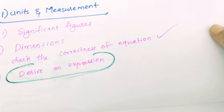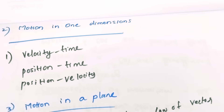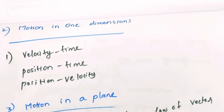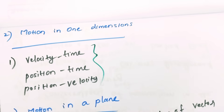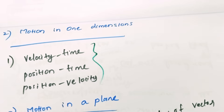The first one is Motion in One Dimension. In that chapter, what is the derivative of relations? Look at the derivative of velocity and time relations. We can see the position and time relations, and the position and velocity relations — all three of these. That is important.